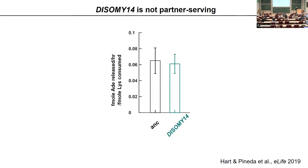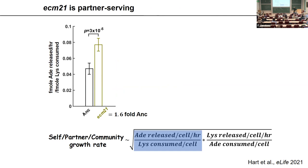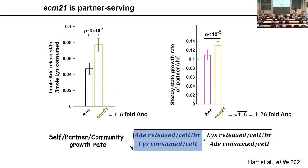Looking at Disomy 14 — the release rate normalized by consumption shows no difference. So it is not partner-serving. But ECM21 is: the release over consumption is 1.6-fold higher. Recall the formula — this 1.6-fold increase leads to an increase in community growth rate, and indeed we see the increased community growth rate equals the square root of this, about 1.3-fold. The entire system is self-consistent: ECM21 is both self-serving and partner-serving — it is win-win.